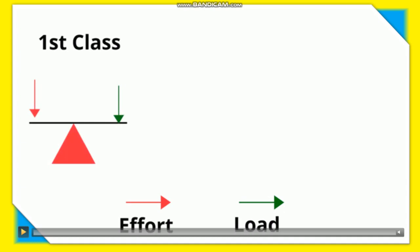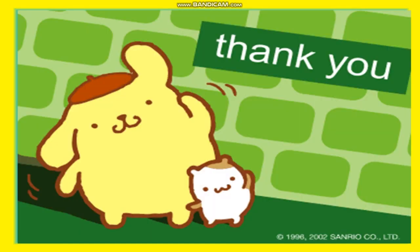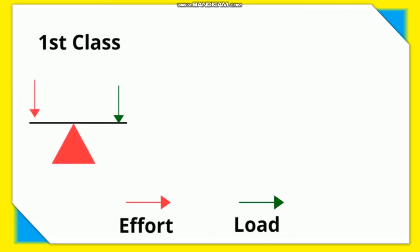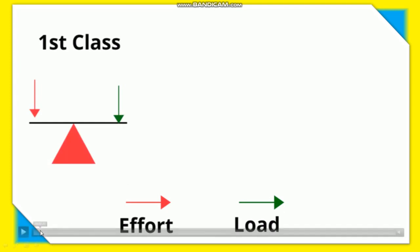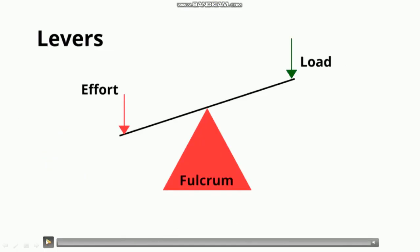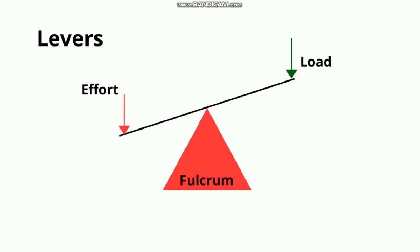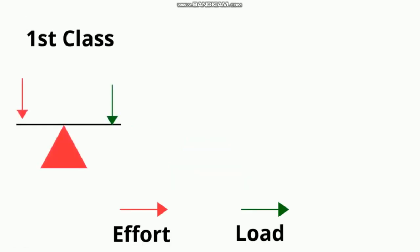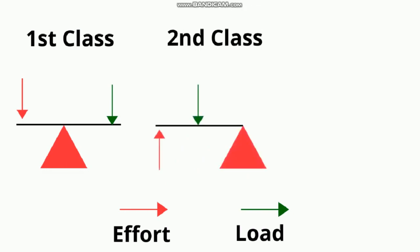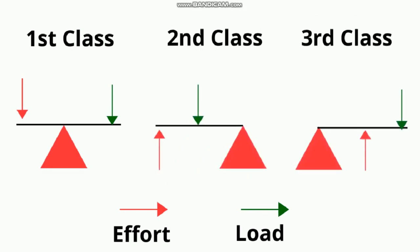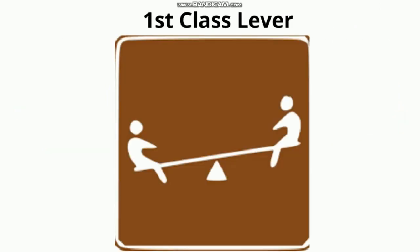We are going to see how to remember all three types of levers. Based on the position of the fulcrum, load, and effort, they are named first class lever, second class lever, and third class lever. In the first class lever the fulcrum is at the center, in the second class lever the load is at the center, and in the third class lever the effort is at the center.